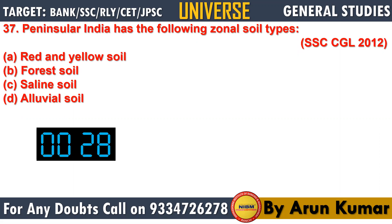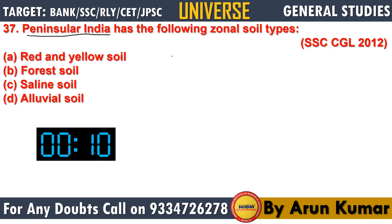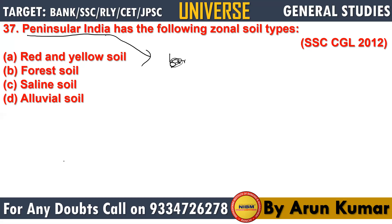Question number 37: peninsular India has which type of soil? First, understand what peninsular India is — land that is surrounded by water on almost three sides. The right answer is red and yellow soil. Red and yellow soil is found in peninsular India.